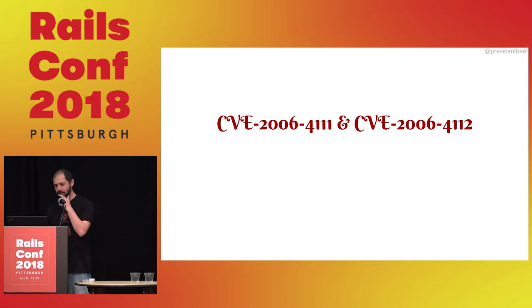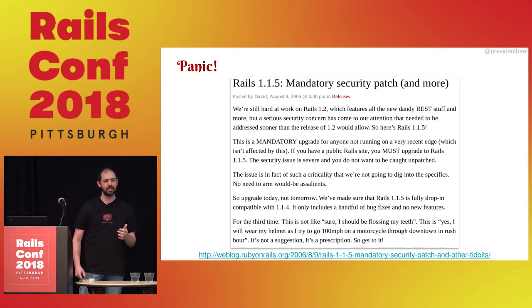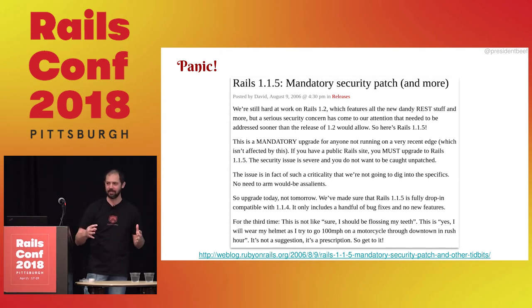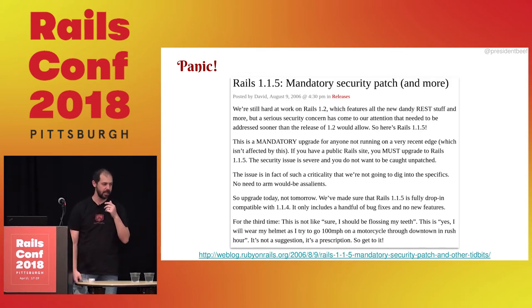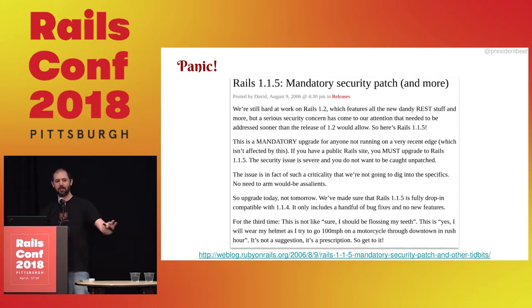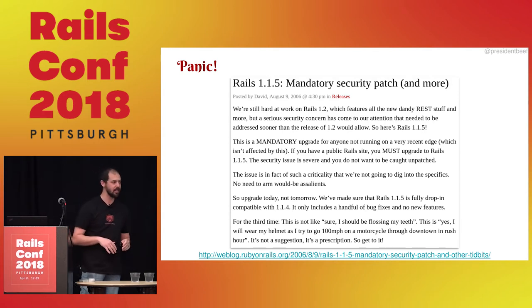I really liked the posts around it because, at least for those of us in the security world, this is a bit of looking back at the way things used to happen — they don't go like this anymore. There was a post by DHH on August 9th, 2006 saying: we're working on Rails 1.2, however there's a mandatory upgrade because there's a security issue — but it's so bad we won't tell you what the security issue is. That's something that in 2018 doesn't happen anymore. When they're released, they're released with a lot of details so everyone can understand the impact.